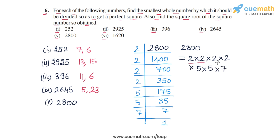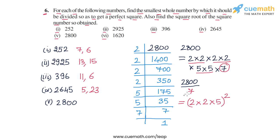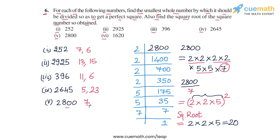Pairing up the prime factors of 2800, we have two pairs of 2 and one pair of 5, but 7 is left unpaired. So we divide 2800 by 7 to get a perfect square. We are left with two pairs of 2 and a pair of 5, written as (2 × 2 × 5)². The square root is 2 × 2 × 5 = 20. So we divide 2800 by 7 to get a perfect square, and the square root of the resulting number is 20.